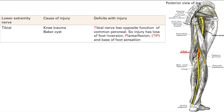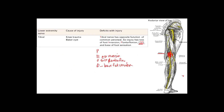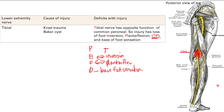The tibial nerve is at the back of the knee, so you can get knee trauma or a Baker's cyst — a cyst at the back of the knee. The functions are the opposite of PEDD: instead of eversion, you lose foot inversion. Instead of dorsiflexion, you lose plantarflexion. And instead of dorsum of the foot, you lose sensation at the base of the foot.